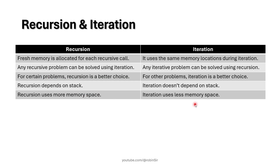Finally, the relation between recursion and iteration. Fresh memory is allocated for each recursive call — every time recursion repeats, new memory is allocated for the variables involved — whereas in iteration the same memory locations are reused. Any recursive problem can be solved using iteration and vice versa, but for certain problems recursion is a better choice. For example, in data structures like binary trees, binary search trees, and linked lists, recursion makes the code much easier to understand and write. However, recursion depends on a stack and uses more memory, whereas iteration doesn't use a stack and uses less memory.